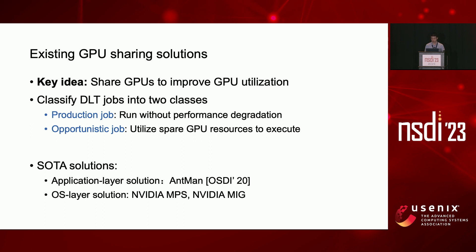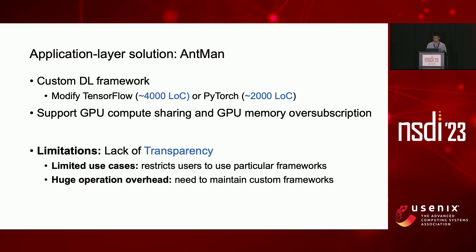It is critical for production environments to ensure that the impact of GPU sharing on production jobs is minimized. GPU sharing solutions can be realized at either the application layer or the OS layer. Antman is a state-of-the-art application layer solution. The primary drawback of application layer solutions is that they are not transparent to users — they require significant modifications to DL frameworks. Antman adds 4,000 lines of code to one version of TensorFlow and 2,000 lines to one version of PyTorch. This requires tremendous engineering effort to support every version of every DL framework, restricting users to supported versions and losing the advantage of container flexibility.